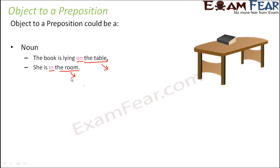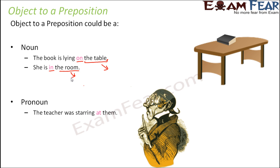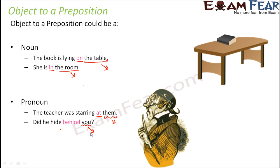However, the object of a preposition could also be a pronoun. For example: 'Look at them.' Here 'at' is the preposition and 'them' is a pronoun, but it also acts as the object of the preposition. Another example: 'Did he hide behind you?' Here 'behind' is the preposition and 'you,' which is a pronoun, is the object.